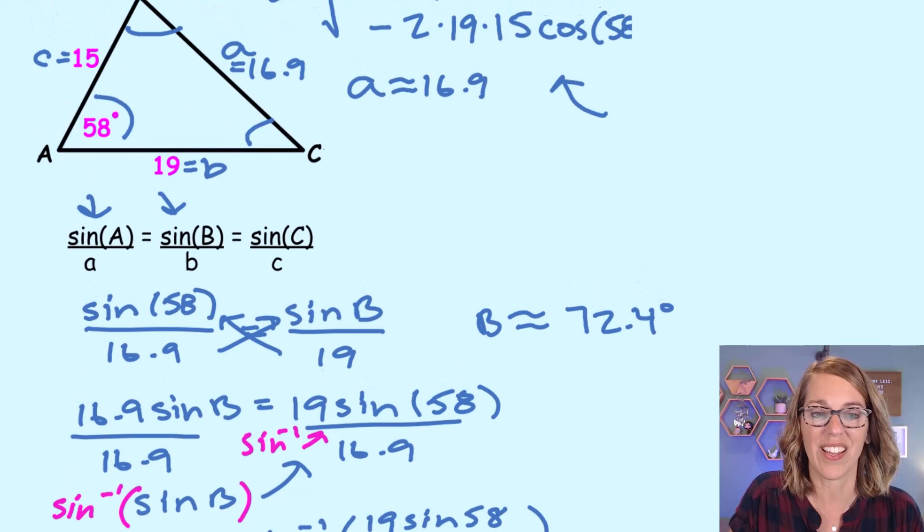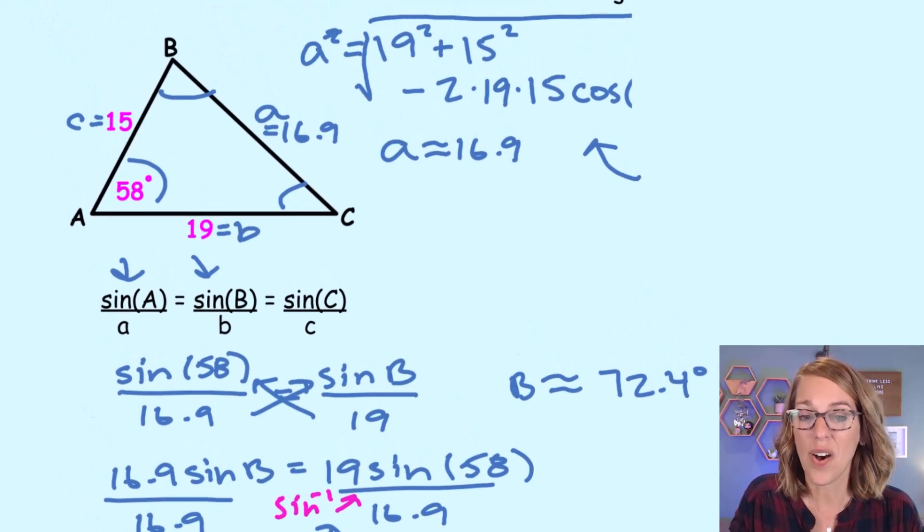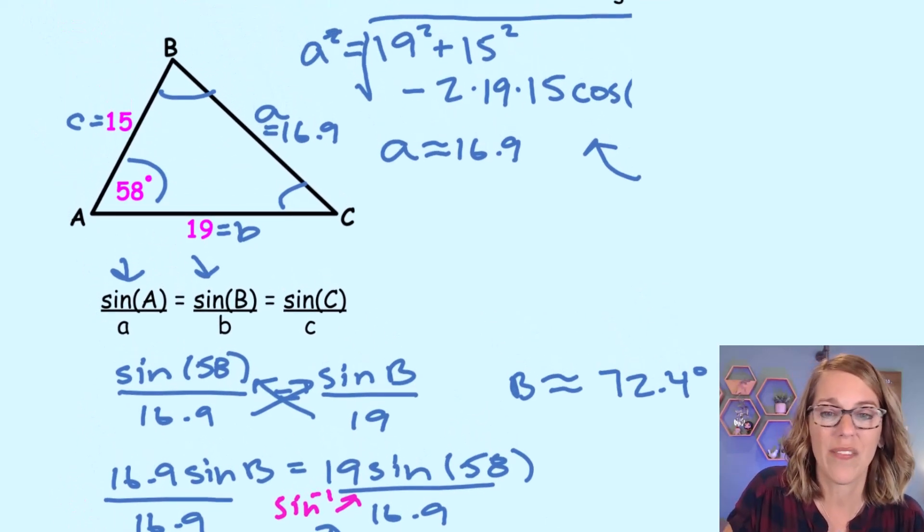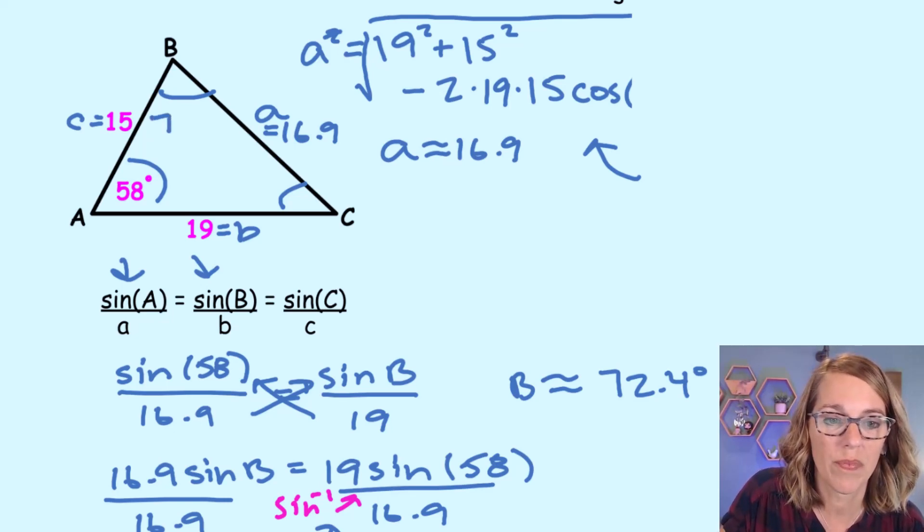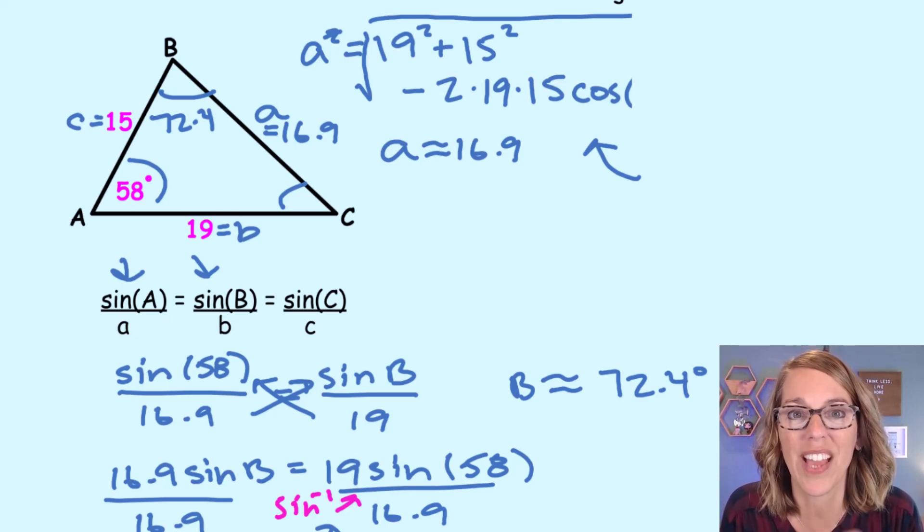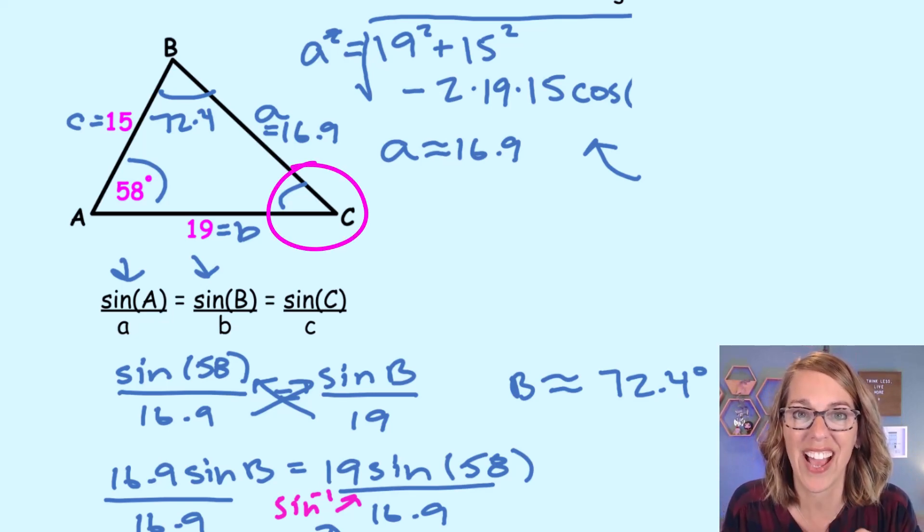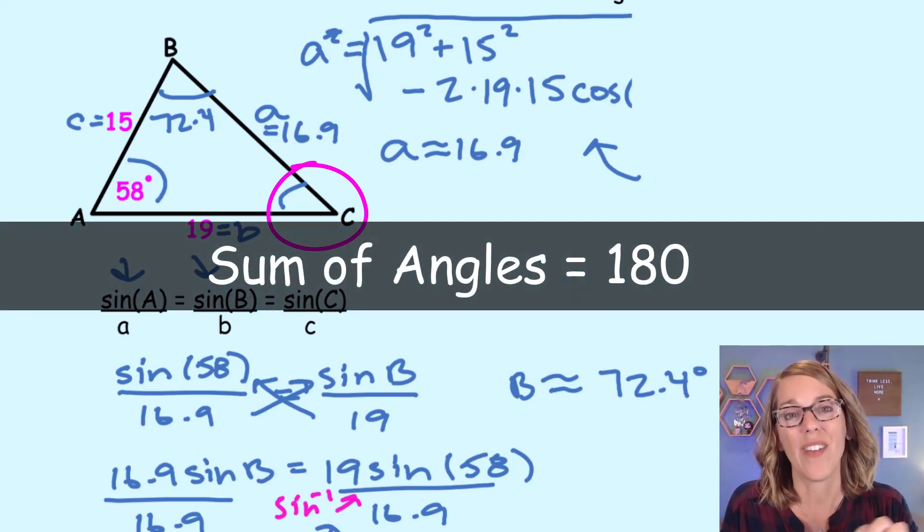Now, where does this leave us? It actually leaves us almost finished. So I've got angle B now, 72.4. How would you solve for that last missing piece, that last angle? Do you know? It's our last tool.